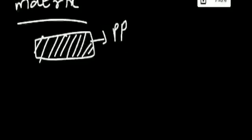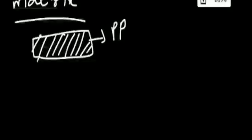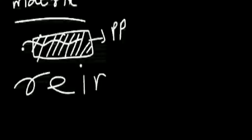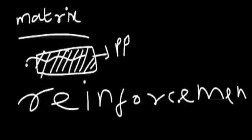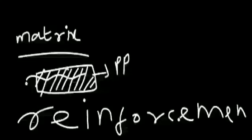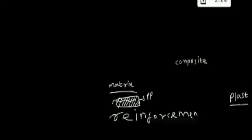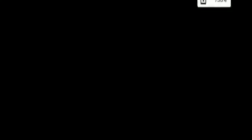If you add PP and add something to it, you will give it strength. That added material is called fiber — the name is Reinforcement. If you add fiber, you can add fiber to the matrix.